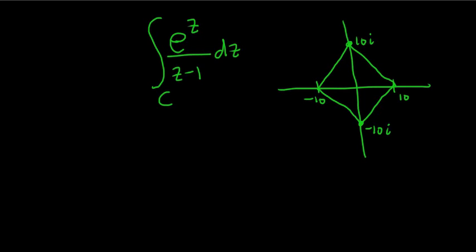Integrate e^z over z minus 1 with respect to z over C. C here is this contour, it's given, and the orientation is counterclockwise. So we're taking it in the positive sense.